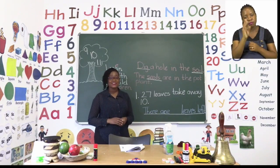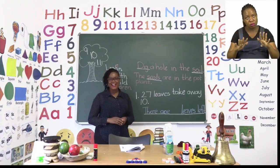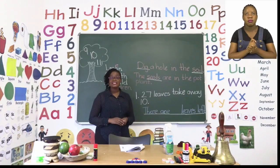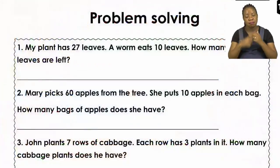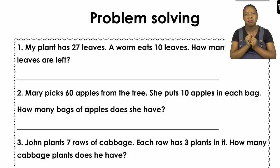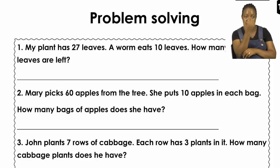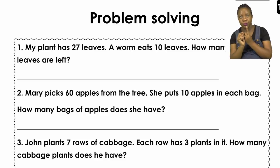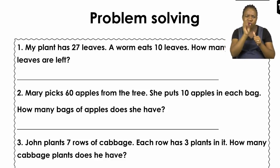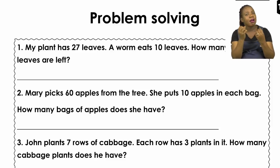When you're done with your creative writing, we move on to some problem solving sums on page 11. The first one says: my plant has 27 leaves. A worm eats 10 leaves. How many leaves are left? There were 27 leaves and a worm ate 10. Now we have to decide — are we going to add, subtract, multiply or share? In this case, the word LEFT tells us what we need to do: we are going to take away, which means subtract.